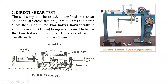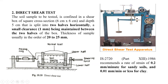The thickness of the sample normally varies between 20 and 25 millimeters. In the direct shear test apparatus, there is a proving ring with dial gauge and a hanger on which we keep the load. As per IS 2720:1986, a rate of strain of 0.2 mm per minute is recommended for sandy soils and 0.01 mm per minute or less for clay soils, which we fix before beginning the experiment. This apparatus can be operated manually or by electric motor.